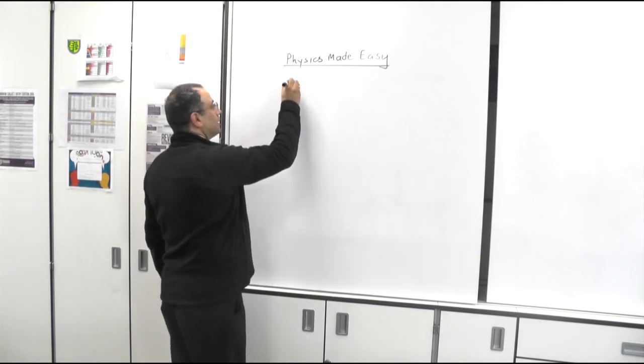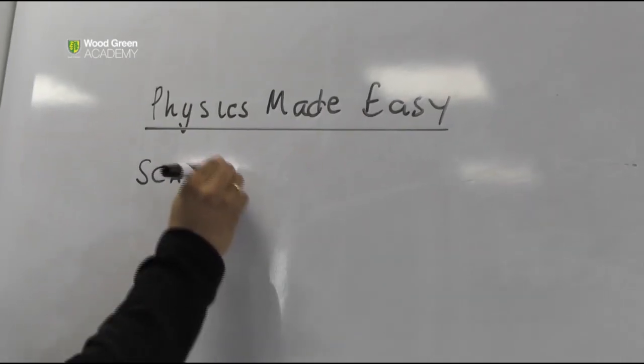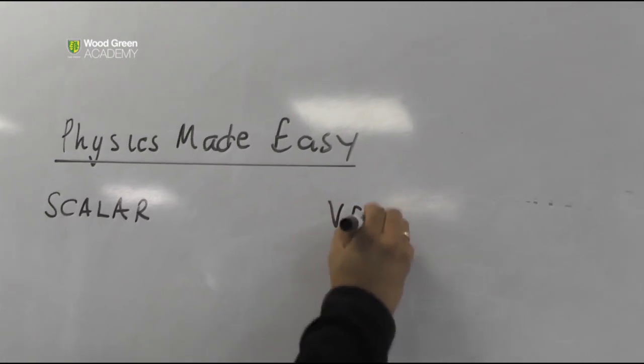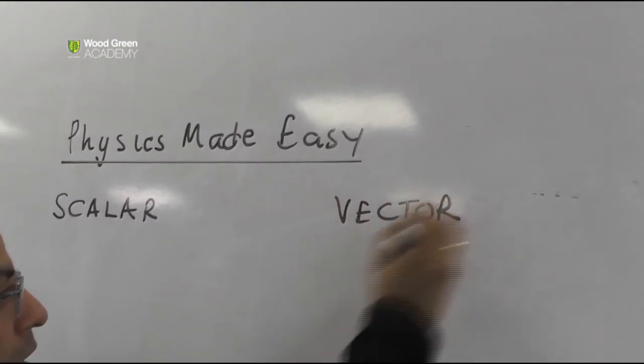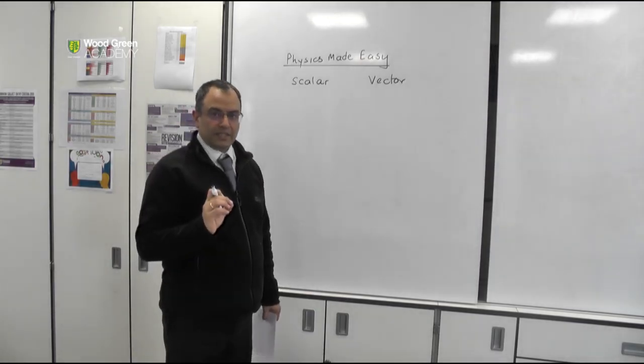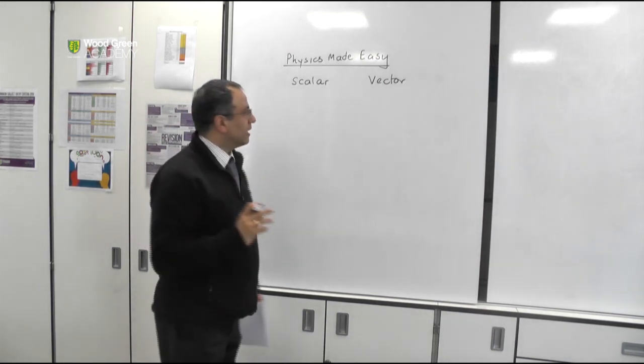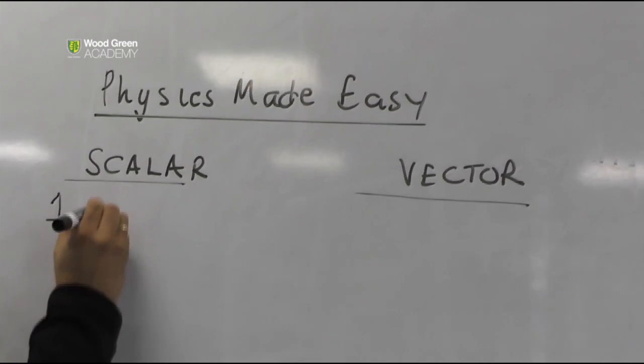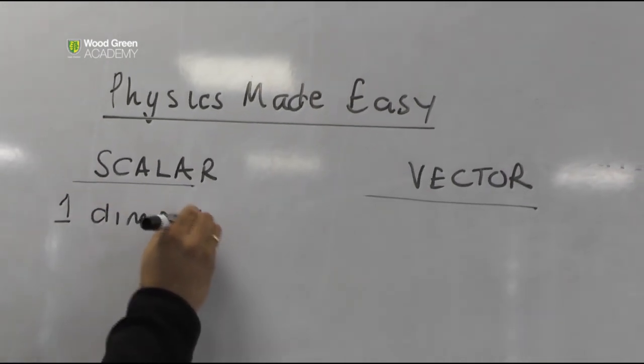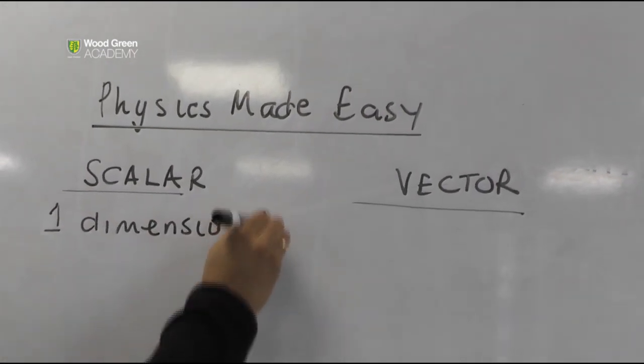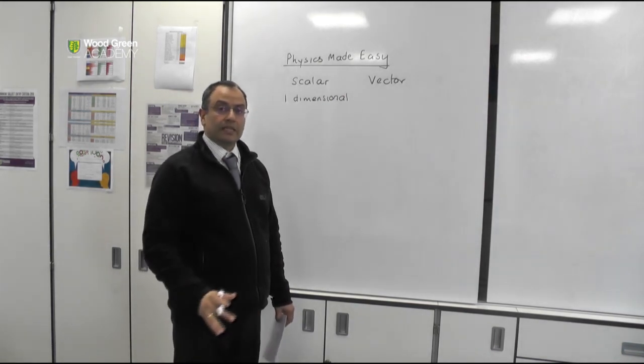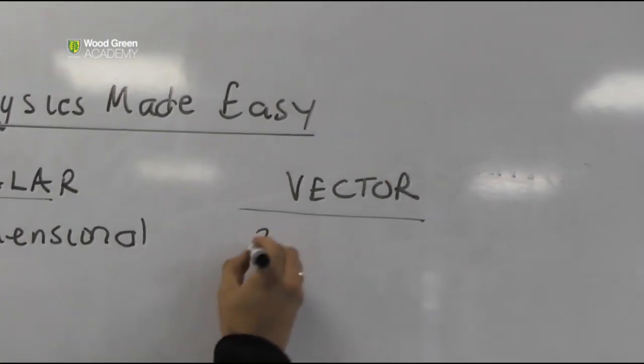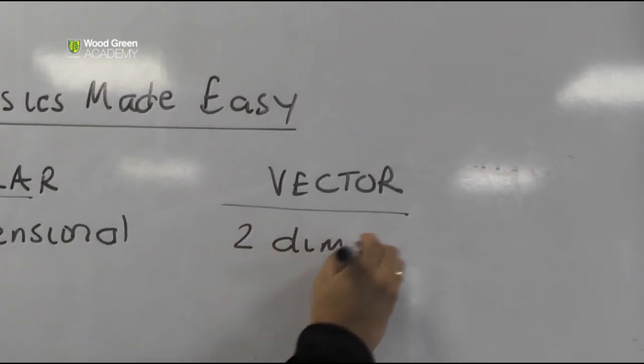So let's have a look at a scalar quantity and a vector quantity. A scalar quantity is basically anything that is one-dimensional. A vector is anything that is two-dimensional.